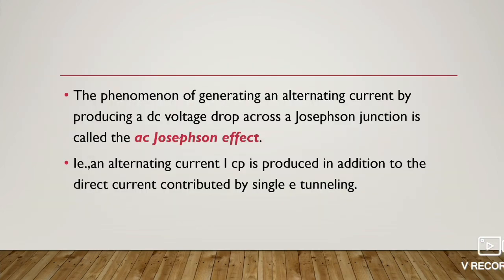The phenomenon of generating an alternating current by producing a DC voltage drop across a Josephson junction is called the AC Josephson effect. An alternating current Icp is produced in addition to the direct current contributed by single electron tunneling.